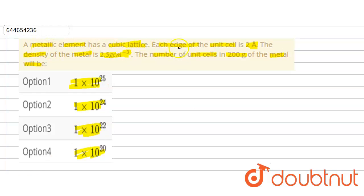So in the question, we have given edge length of the unit cell which is 2 angstrom. a is 2 angstrom, so we will convert it into centimeter: it is 2 × 10^-8 centimeter.